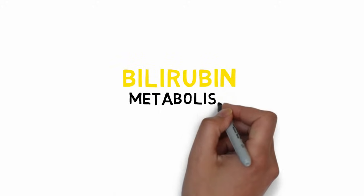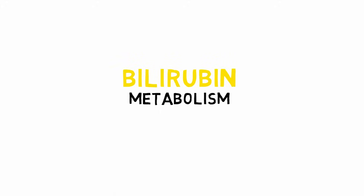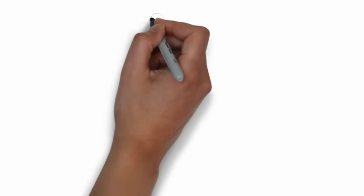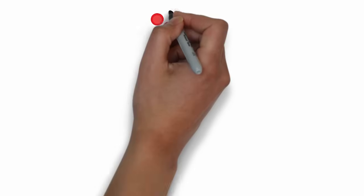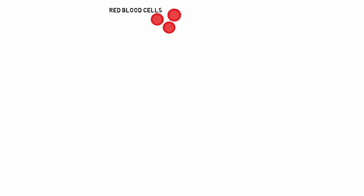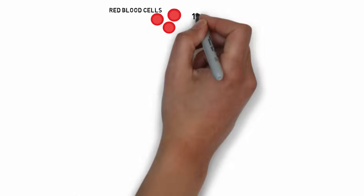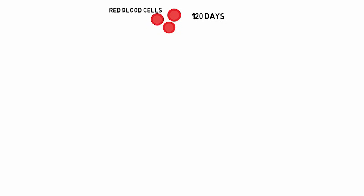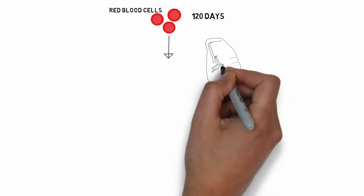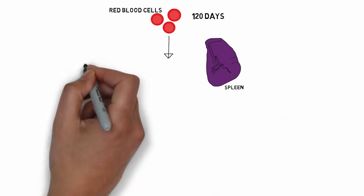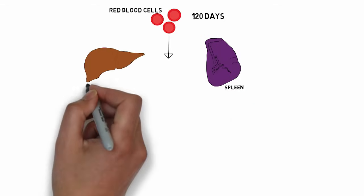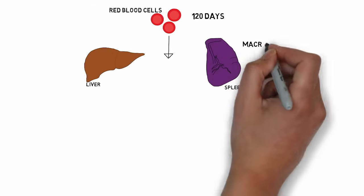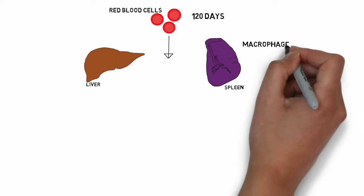In this video we will study about bilirubin metabolism. The bilirubin metabolism begins with the red blood cells, which have a lifespan of approximately 120 days. After they complete their life cycle, they are destroyed in organs like the spleen and the liver, which contain numerous macrophages.